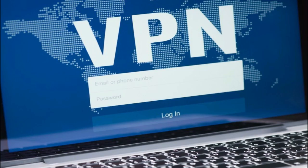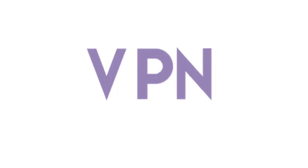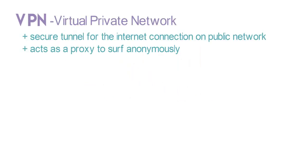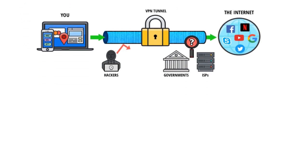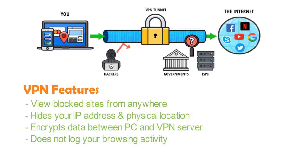Here comes the VPN. VPN, or Virtual Private Network, is a secure tunnel for the internet connection on a public network. It also acts as a proxy, allowing you to surf the web anonymously. Even hackers and the government couldn't trace the VPN network. Some of the features of VPN are: view blocked sites from anywhere, mask your IP address, hide your physical location, encrypt data between a computer and the VPN server, and it does not save your browsing history.